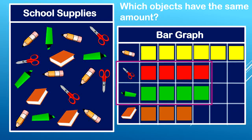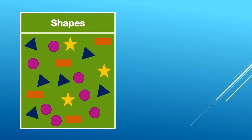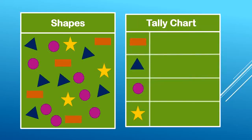Now let's work on a tally chart. This picture is labeled shapes. There are a lot of shapes in this picture, and let's see if we can put them in a more organized way to count how many of each item there are. Here's our tally chart. At the top we see the title tally chart — so this is different from a bar graph. In the bar graph we used boxes to fill in to show how many of each item there were. In the tally chart we're going to do it a little differently.